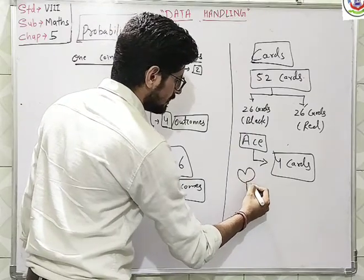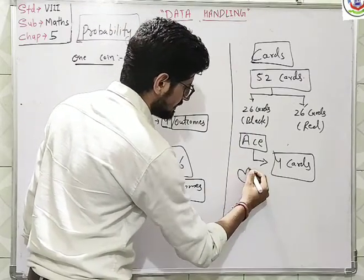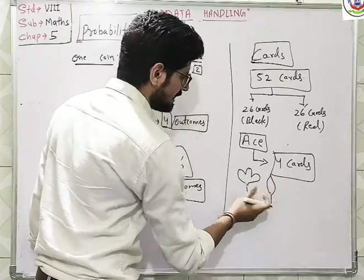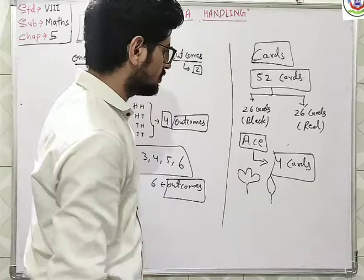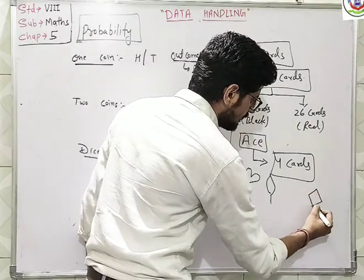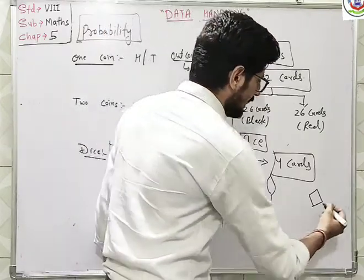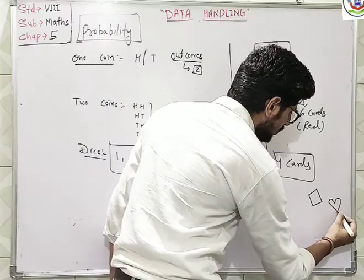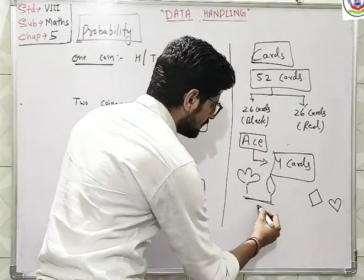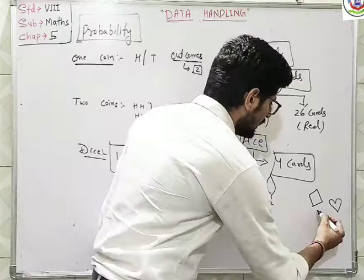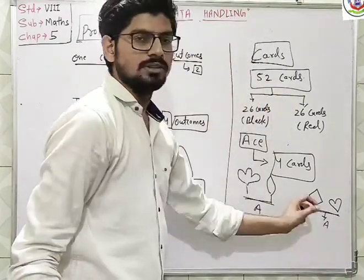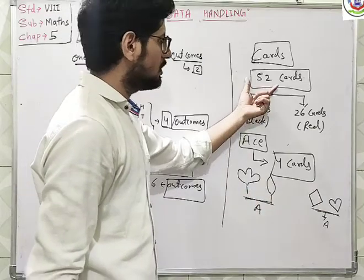That is Spade and Club. Ace of Spade looks like this, and Club. Spade and Club are the two that are present. And the two cards that are red are first one is Diamond and second one is Heart.